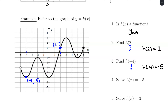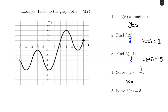Solve h of x equals negative 5. We're given a y value and need to find all x values that satisfy it. I recommend drawing a horizontal line at y equals negative 5 and looking at all intersection points. The line intersects the function at (negative 4, negative 5) and at (0, negative 5). So the solutions are x equals negative 4 or x equals 0 — two possibilities.